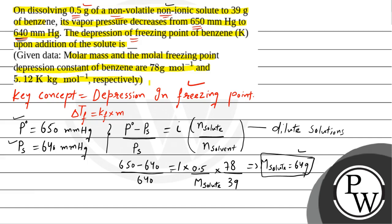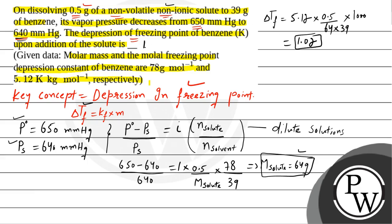Now we can calculate ΔTf. ΔTf = Kf × m. Kf is the molar freezing point depression constant = 5.12 K·kg/mol. Molality m = (moles of solute) / (mass of solvent in kg) = (0.5 / 64) / (39 / 1000). Simplifying this gives ΔTf = 1.02. So the correct answer is 1.02.